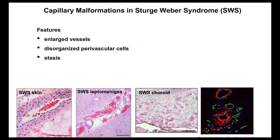The capillary malformations in Sturge-Weber syndrome feature enlarged vessels, as seen in H&E sections. In a skin specimen — a port wine stain — we see huge vessels with chaotic perivascular cells. Here's a capillary malformation in the leptomeninges, located in the sulci which are invaginations into the brain. And in the choroid there are numerous blood-filled vessels. Another feature is disorganized perivascular cells, shown by immunostaining with endothelial cells in green and mural or perivascular cells in red — very uneven coverage, thick layers in some areas and few perivascular cells in others.